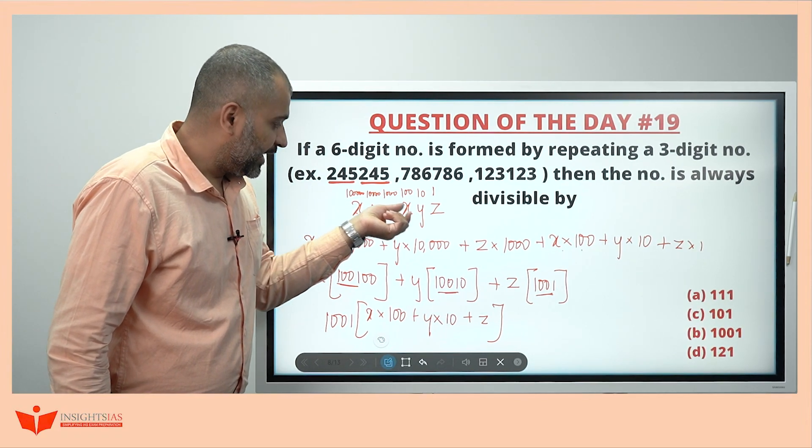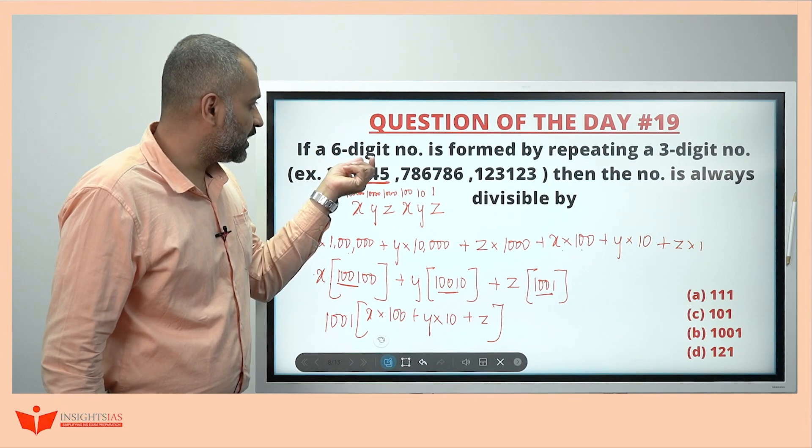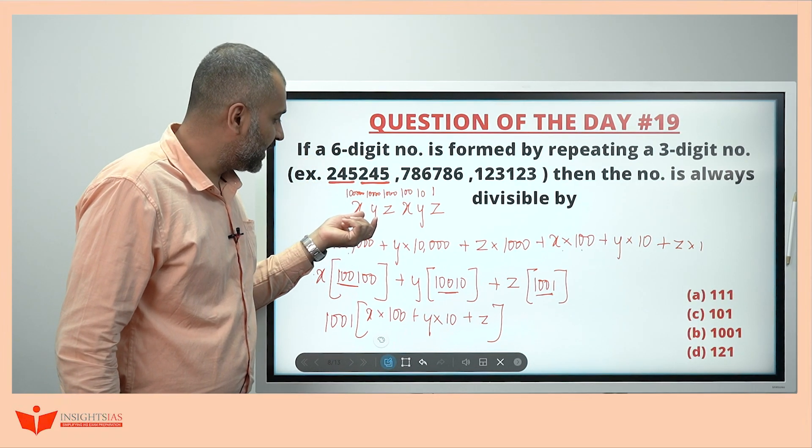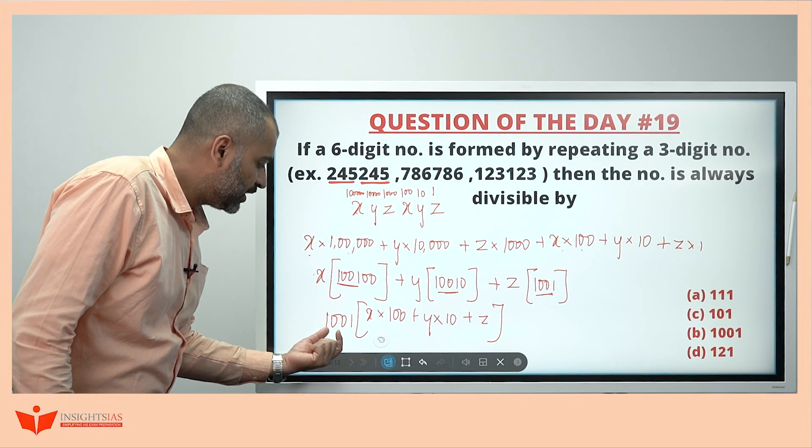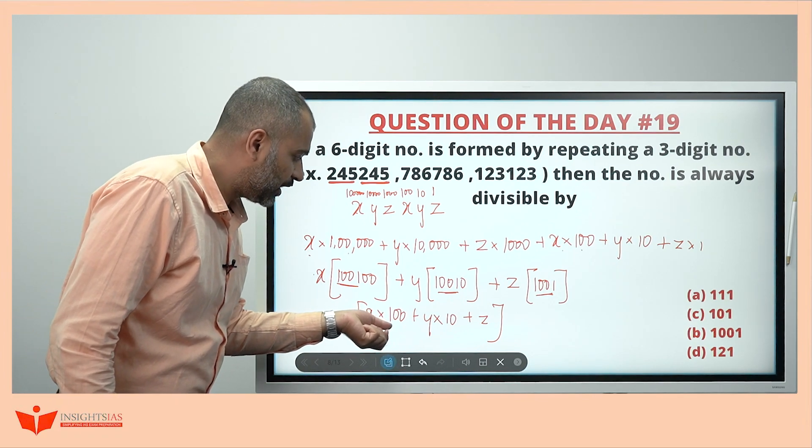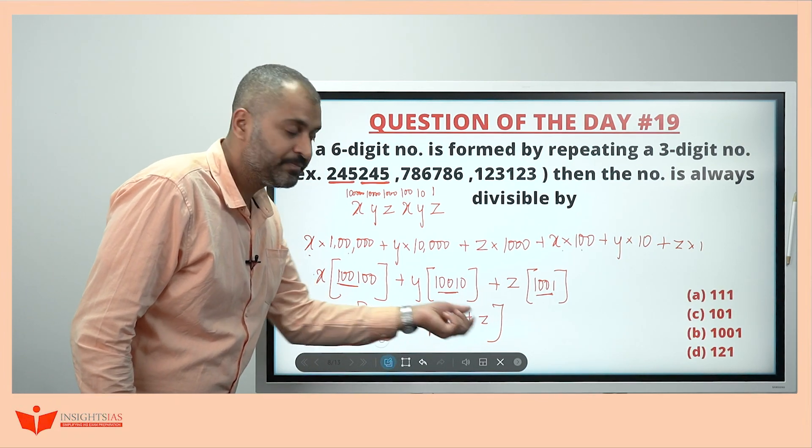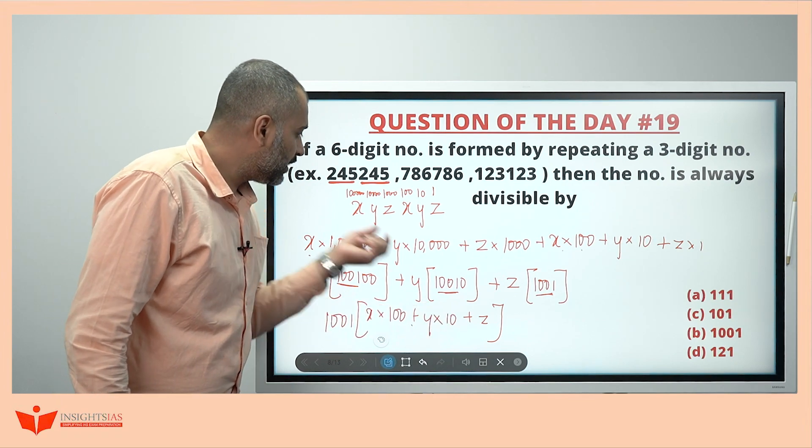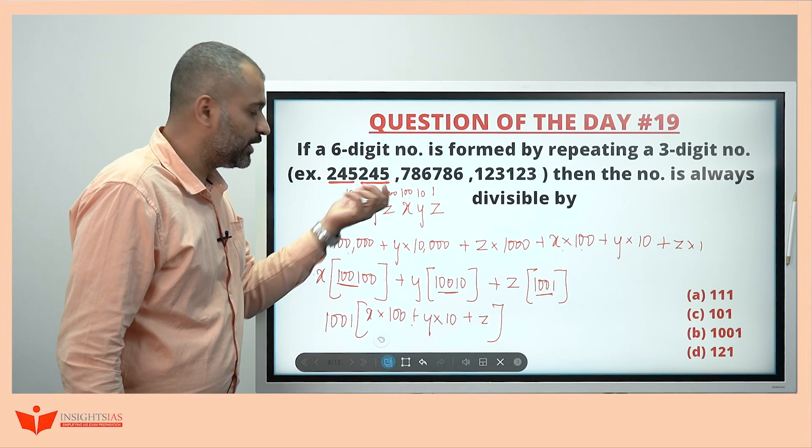Any such number x, y, z, x, y, z—okay, 6 digit number formed by repeating 3 digits can be written in this form. 1001 times of x into 100 plus y into 10 plus z, where x, y are the digits, something like 2, 4, 5, 2, 4, 5.